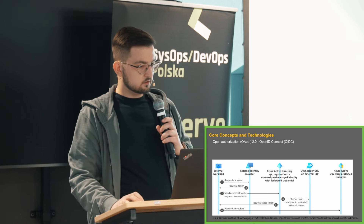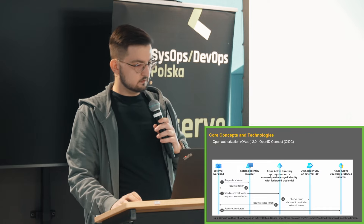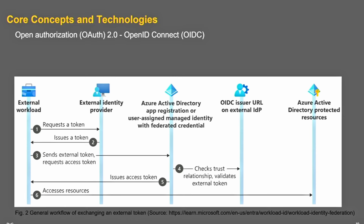Jak działa autoryzacja poprzez Workload Identity Federation? Mamy jakiś zewnętrzny byt, który chce się dostać do naszych zasobów w Azure. Co robi najpierw? Komunikuje się nie z Azurem, tylko ze swoim identity providerem, który odsyła mu token, dzięki któremu jest w stanie odpytać Azure o to, czy taki token by przeszedł. Jeżeli by przeszedł, to OpenID Connect issuer po stronie IDP jest w stanie to dla Azure zwalidować. Po otrzymaniu takiej walidacji Azure odpowiada nam tokenem i daje dostęp do zasobów.